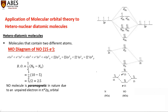As discussed in the previous lecture, up to 14 electrons the filling is: pi 2px and pi 2py fill first, after that sigma 2pz fills. But after 14 electrons the filling is different — first sigma 2pz fills, then pi 2px and pi 2py. NO is an example of a 15-electron molecule.